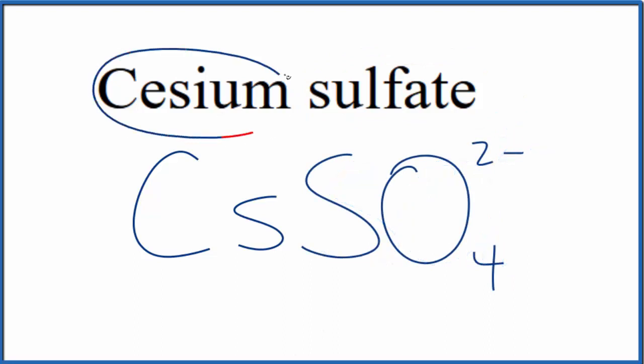So cesium is a metal, and then the sulfate ion here, that's a group of nonmetals. This is an ionic compound. The charges need to balance.